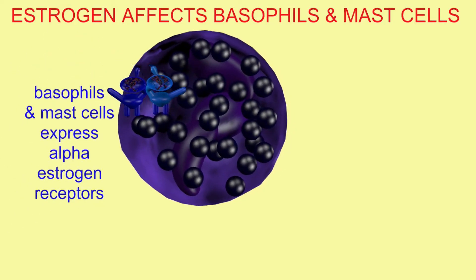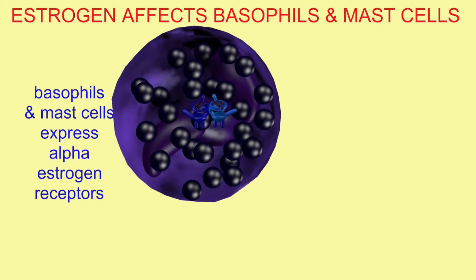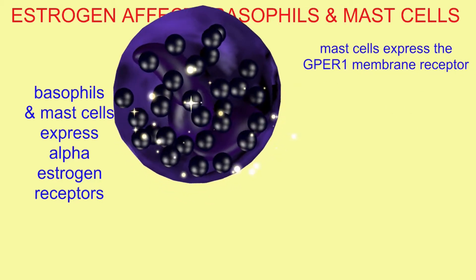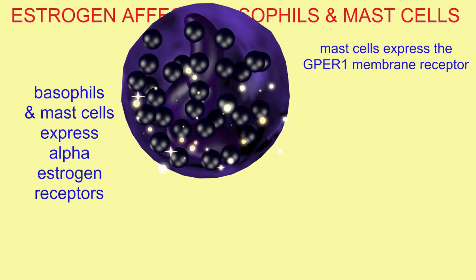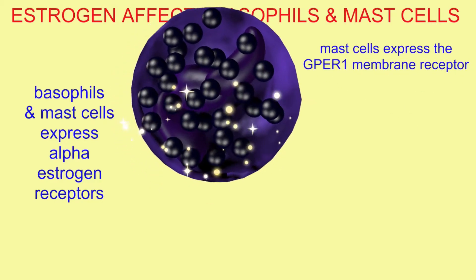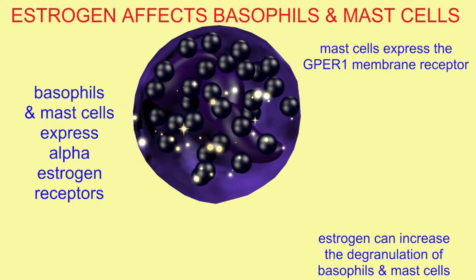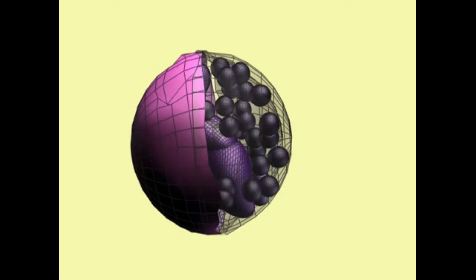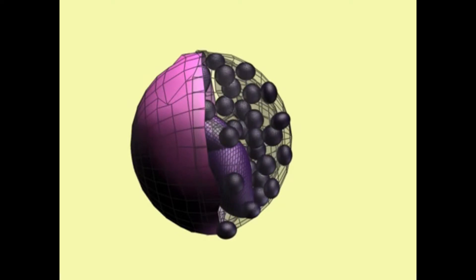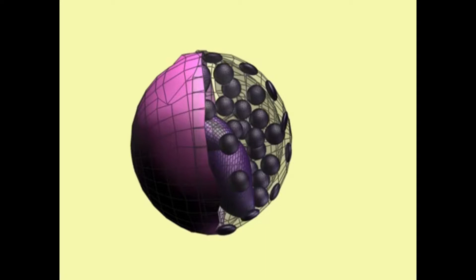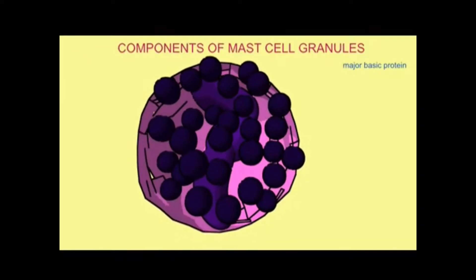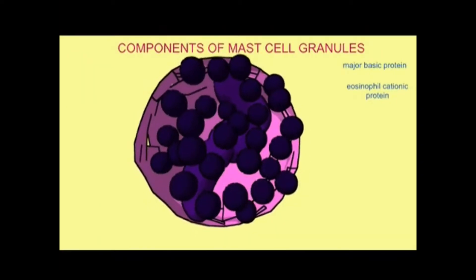Mast cells and basophils express alpha estrogen receptors. Mast cells also express the G-protein coupled receptor which responds to estrogen. Estrogen can increase the degranulation of both basophils and mast cells, which promotes inflammation.